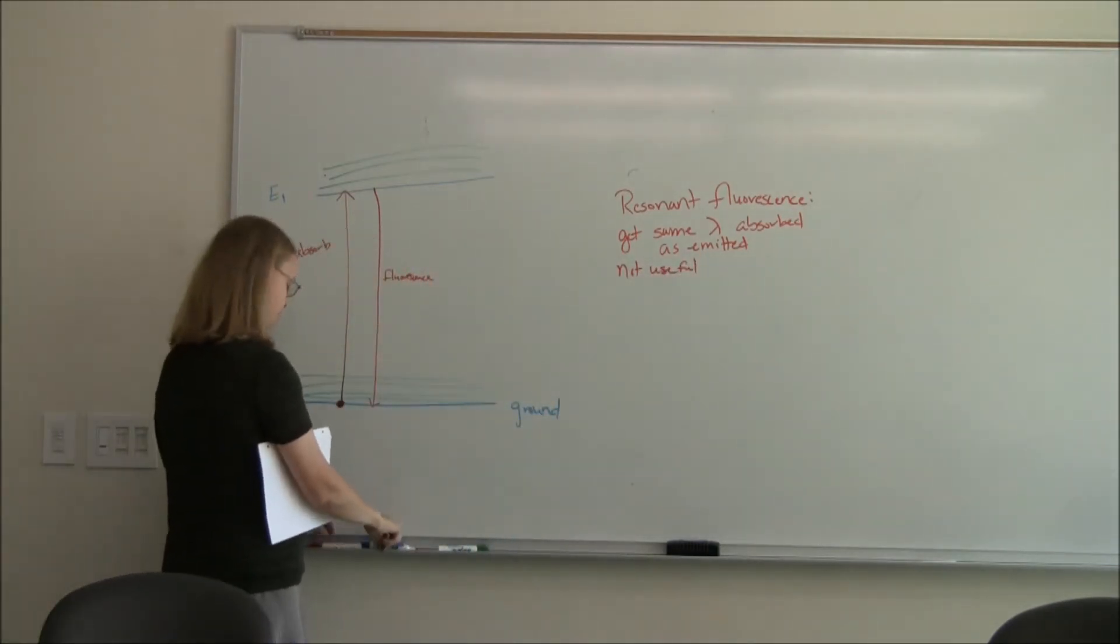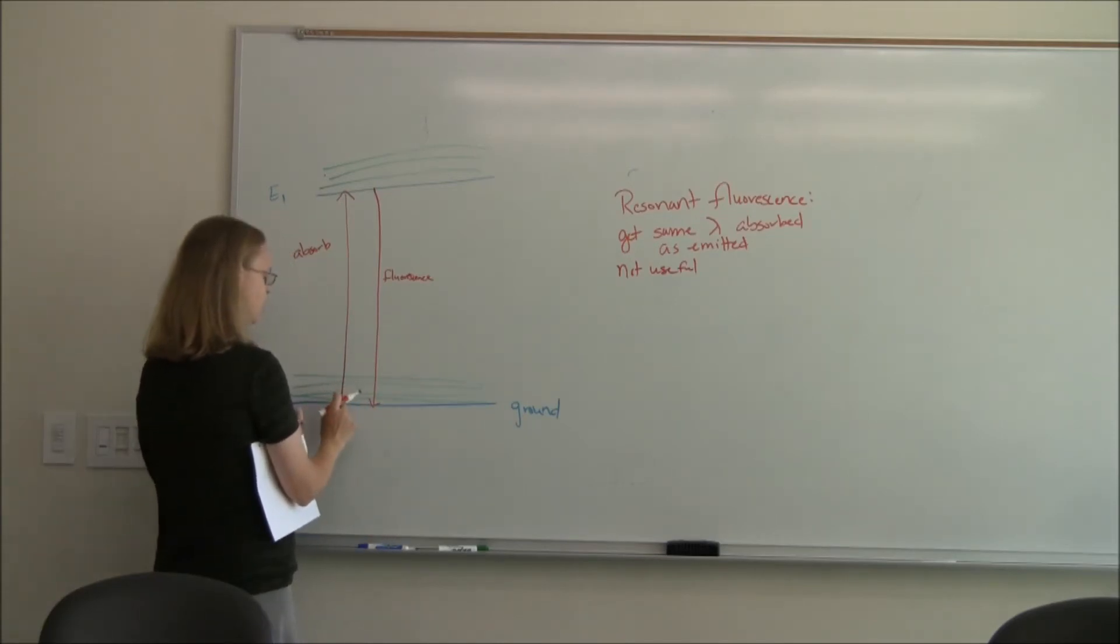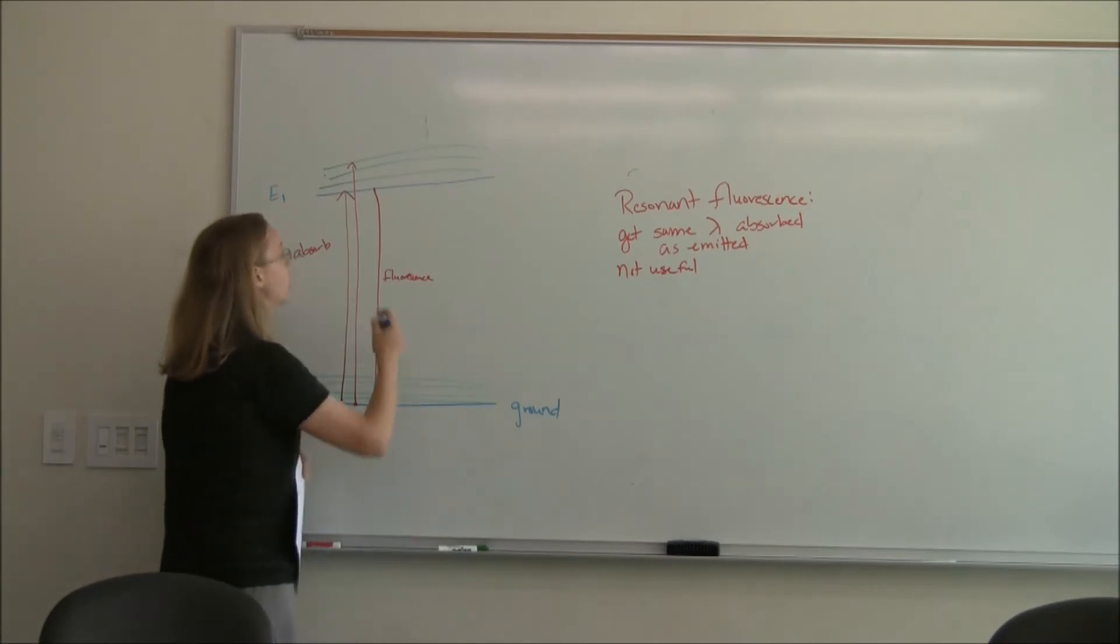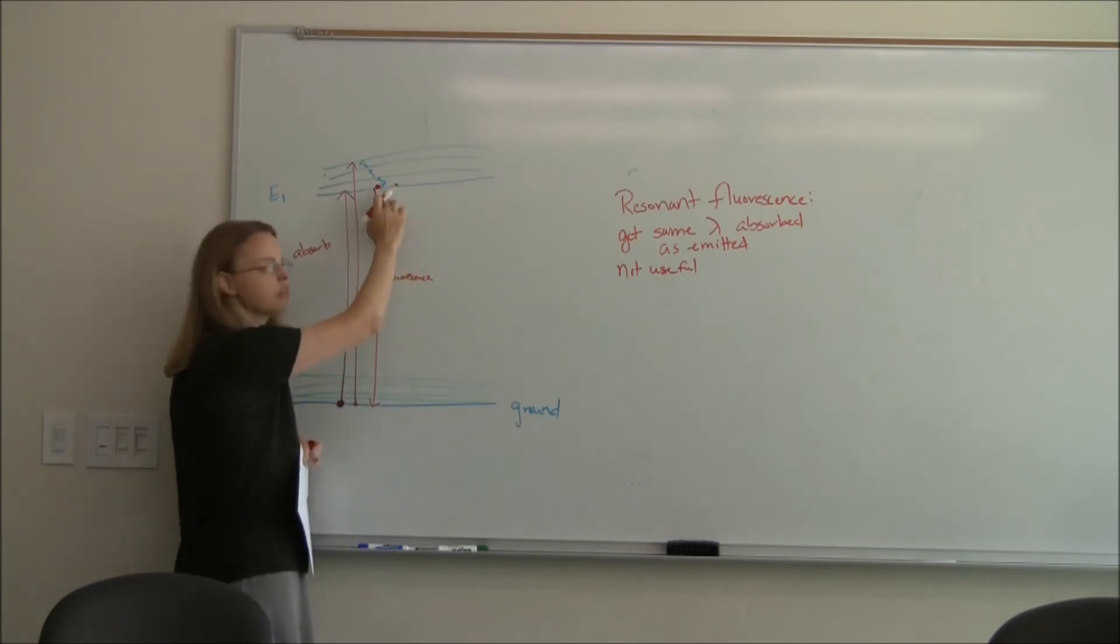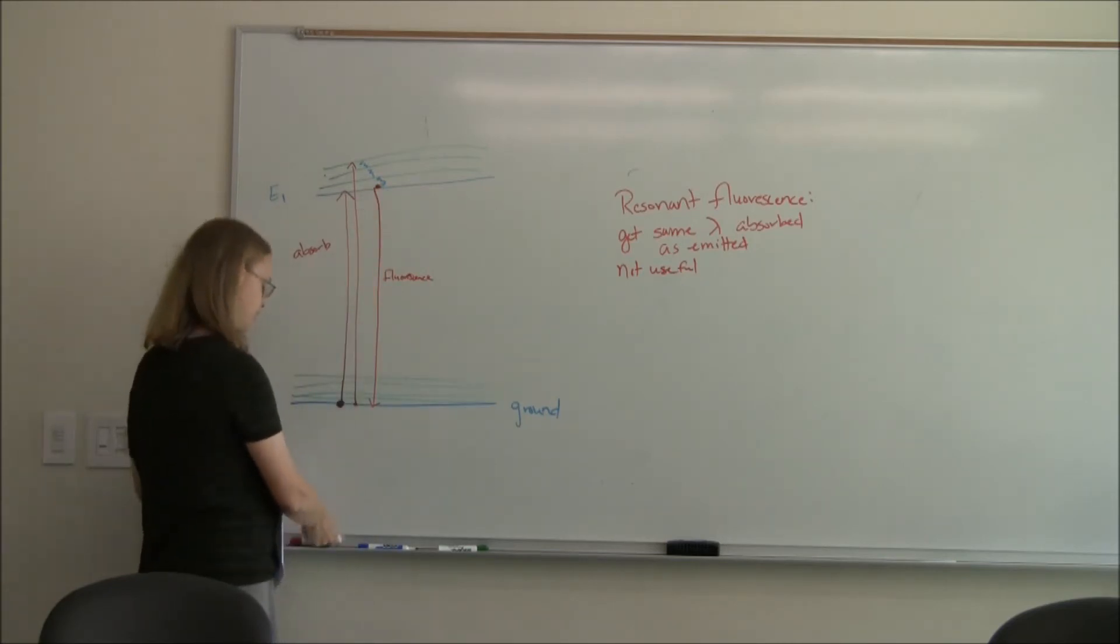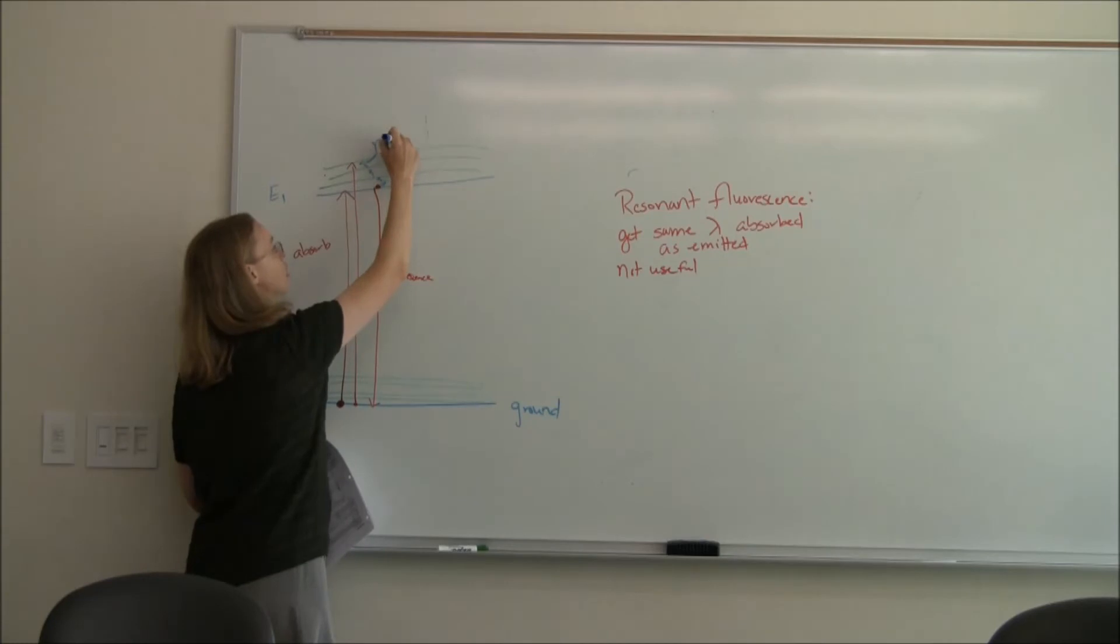What we really want to do in fluorescence then is promote my molecule not up to just this E1, but actually to promote it up to one of these vibrational or rotational states. Once it's up there, it can undergo non-radiative decay to this electronic state. Once it's at an electronic state, it can fluoresce back down. You only ever get fluorescence from the excited electronic state. You can never get fluorescence from the rotational and vibrational states.